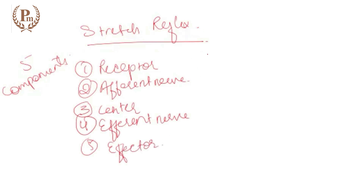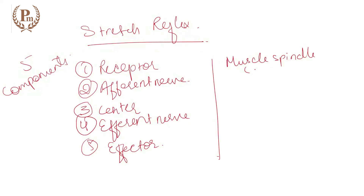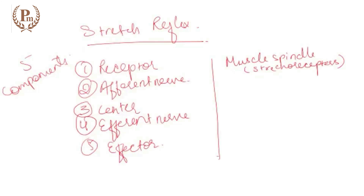Let us identify the components for the stretch reflex. What are the receptors? Muscle spindle. What is the muscle spindle going to sense? Muscle spindle sends the sensory impulse through the 1A fiber to the center. In one word, your muscle spindles sense the stretch in the intrafusal fiber — so they are stretch receptors, sensing the stretch in the muscle.